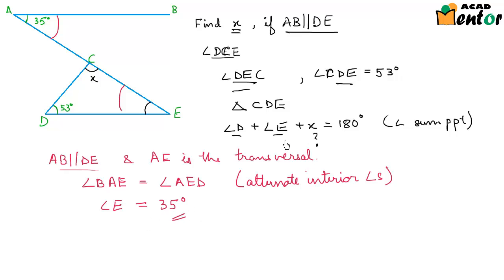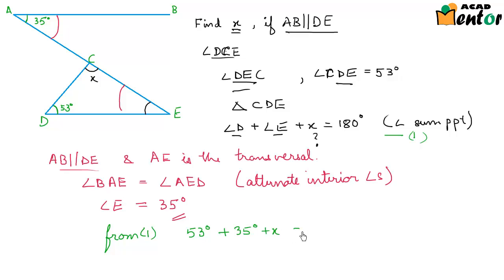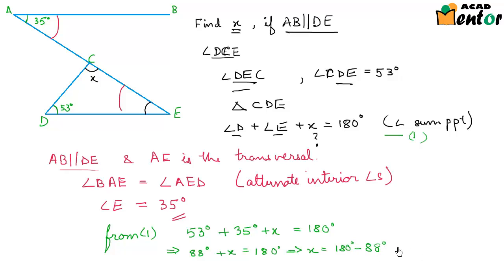So when angle E is 35 degrees and angle D is 53 degrees, I can now find the value of x. From the angle sum equation: 53 degrees plus 35 degrees plus x equals 180 degrees. This gives 88 degrees plus x equals 180 degrees, so x equals 180 degrees minus 88 degrees, which is 92 degrees. So we have found x equals 92 degrees.